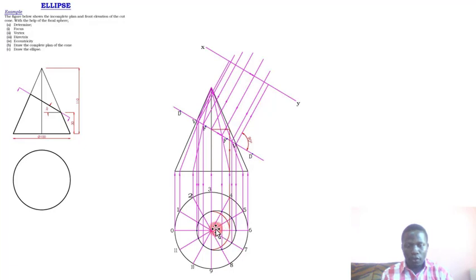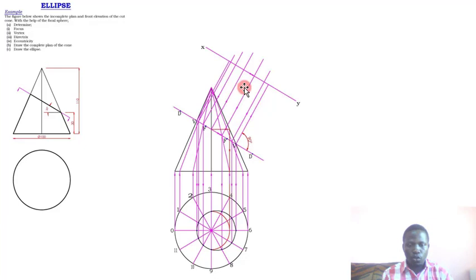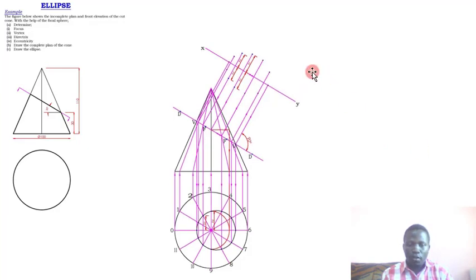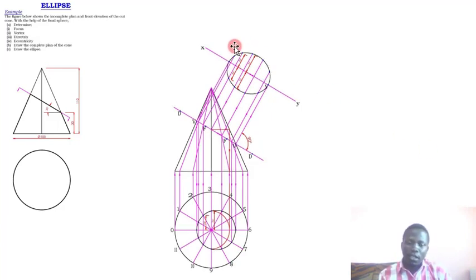To plot the ellipse, pick the heights from the complete plan. For example, pick the height for point three — from the center to three — and mark those points on the XY line. Do the same for point four, and for all other points. When you take all those points and join them, you obtain a curve — and that is the ellipse.